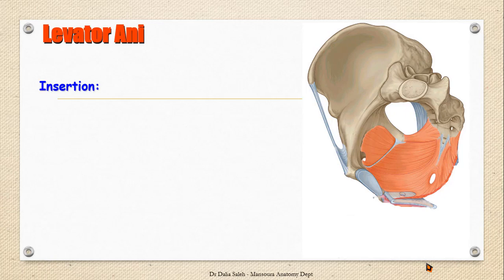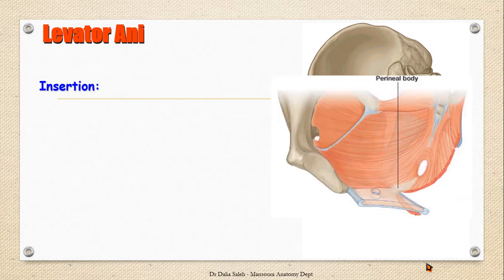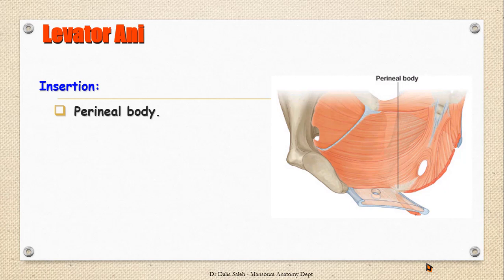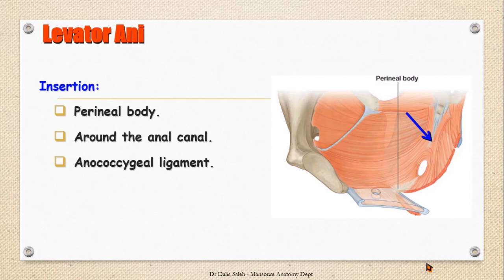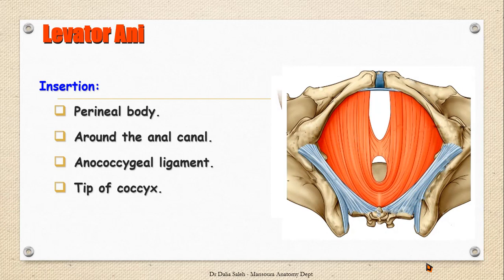The insertion of the levator ani is at the midline. Starting anteriorly at the perineal body, which lies just anterior to the anal opening, its fibers are then attached around the anal canal, then at the anococcygeal ligament, and finally at the tip of the coccyx. We can see the insertion of the levator ani from the anterior view: the perineal body anteriorly, then the puborectalis part around the anal canal, then the pubococcygeal part at the anococcygeal ligament, and finally the insertion at the tip of the coccyx.